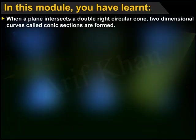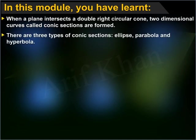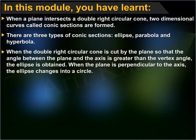In this module, you have learned that when a plane intersects a double right circular cone, two-dimensional curves called conic sections are formed. There are three types of conic sections: ellipse, parabola, and hyperbola. When the double right circular cone is cut by the plane so that the angle between the plane and the axis is greater than the vertex angle, the ellipse is obtained.